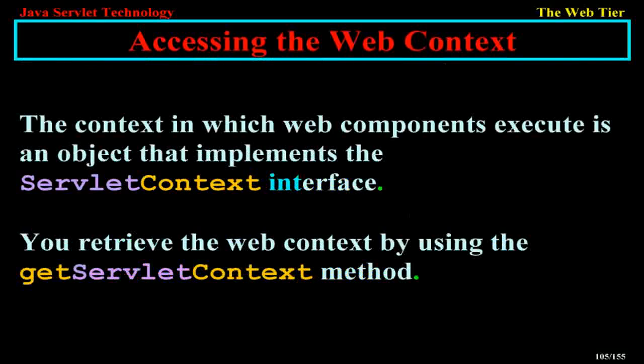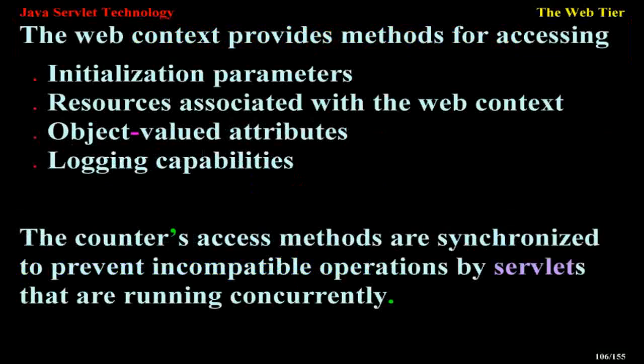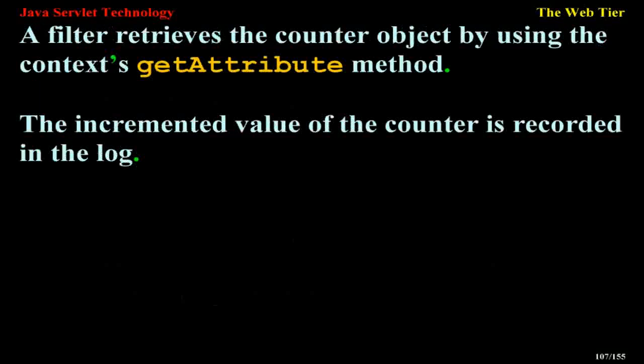Accessing the web context. The context in which web components execute is an object that implements the ServletContext interface. You retrieve the web context by using the getServletContext method. The web context provides methods for accessing initialization parameters, resources associated with the web context, object-value attributes, and logging capabilities. The counter's access methods are synchronized to prevent incompatible operations by servlets running concurrently. A filter retrieves the counter object by using the context's getAttribute method, and the incremented value of the counter is recorded in the log.